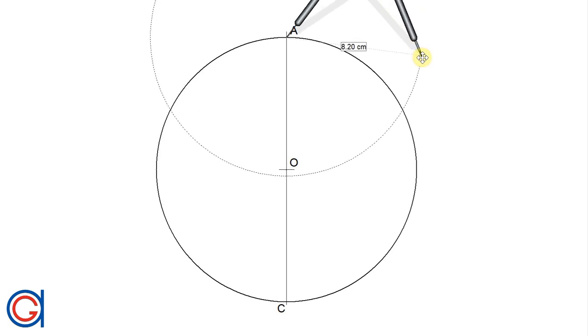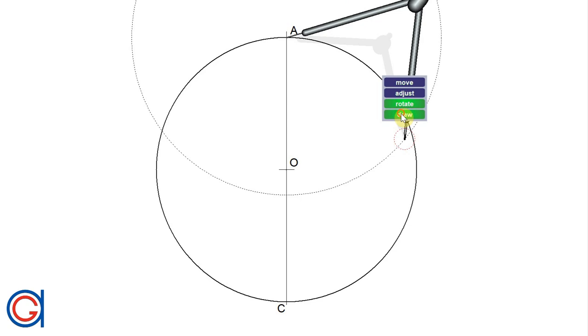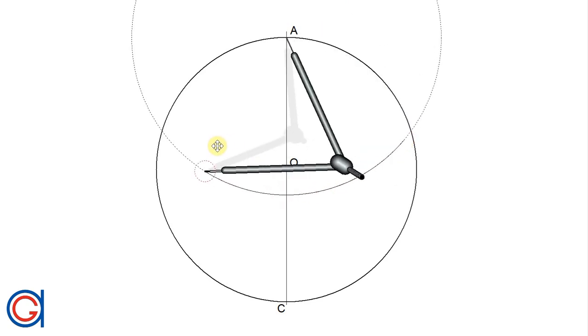and a radius slightly longer than half the diameter AC, we're going to scribe an arc as can be seen here.